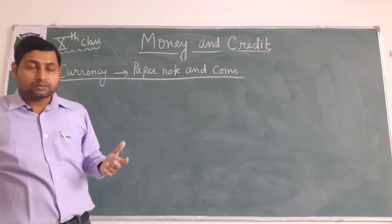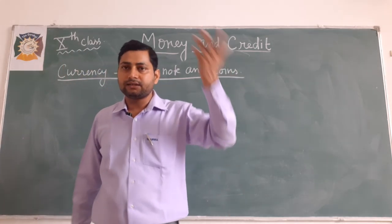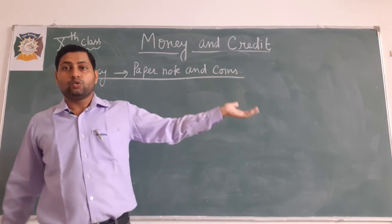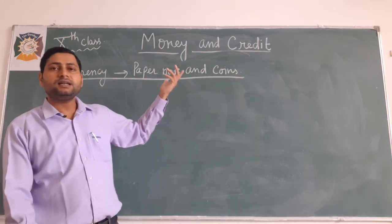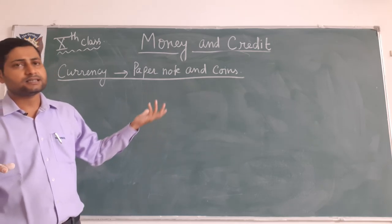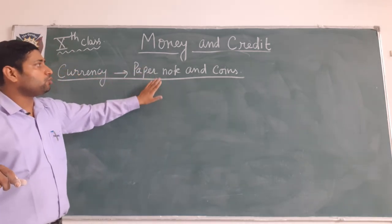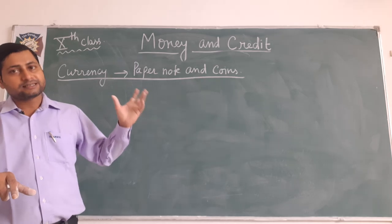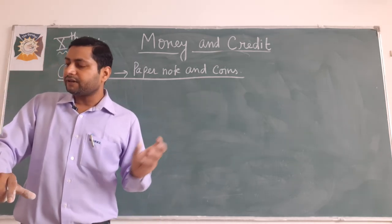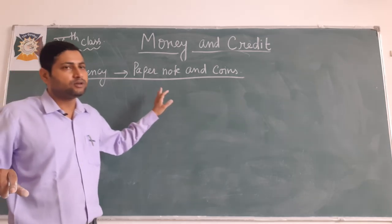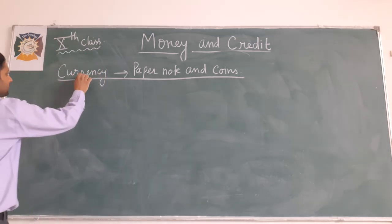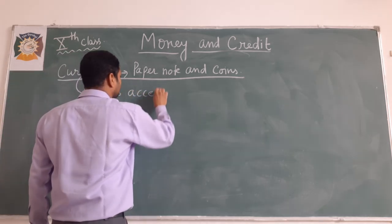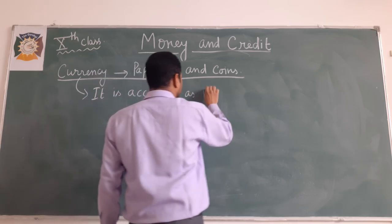Unlike grains and cattle, modern currency is neither of everyday use nor has any use of its own. One could say this paper has no intrinsic value — earlier gold and silver had a value, or grain and cattle had their own importance. Then why is it accepted as a medium of exchange? The answer is: it is accepted as a medium of exchange because the currency is authorized by the government of the country.